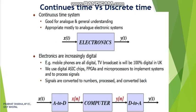First we discuss continuous time versus discrete time systems. Continuous time systems are good for analog signals and general understanding, appropriate mostly to analog electronic circuits. Electronics are increasingly digital — mobile phones are digital and TV broadcasts are 100% digital in the UK. Digital signals are improving day by day, and suppose we have an analog signal and we want to convert it into a digital signal using an A to D converter.